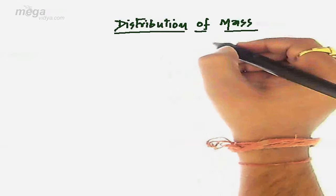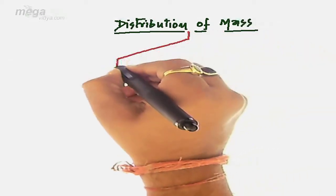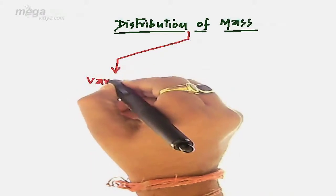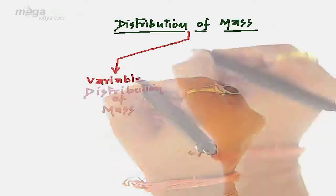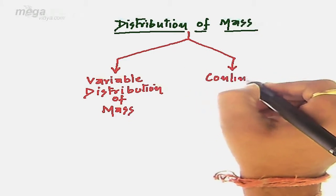Basically, the distribution of mass inside any system can be done in two ways. The first way is variable distribution of mass and the second is uniform or continuous distribution of mass.